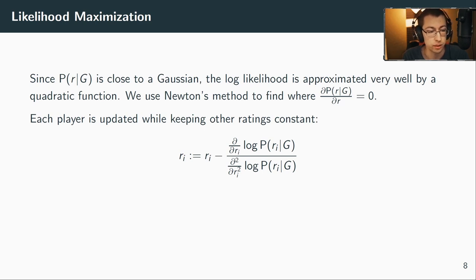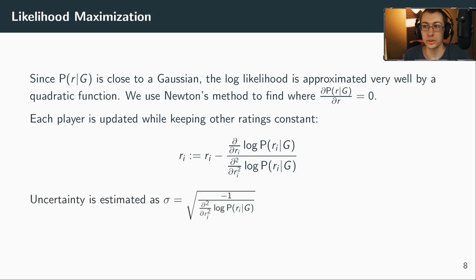Now we then get this iterative formula where we calculate for every player, we keep all the other players constant so we can calculate the derivatives easily, and then do one Newton iteration for that player and do that for all players. If we keep repeating that, we get the maximum likelihood for all players. And since we've already gotten the second derivative of the log-likelihood, we also know the uncertainty. We do that by just taking the inverse - you've seen this before.